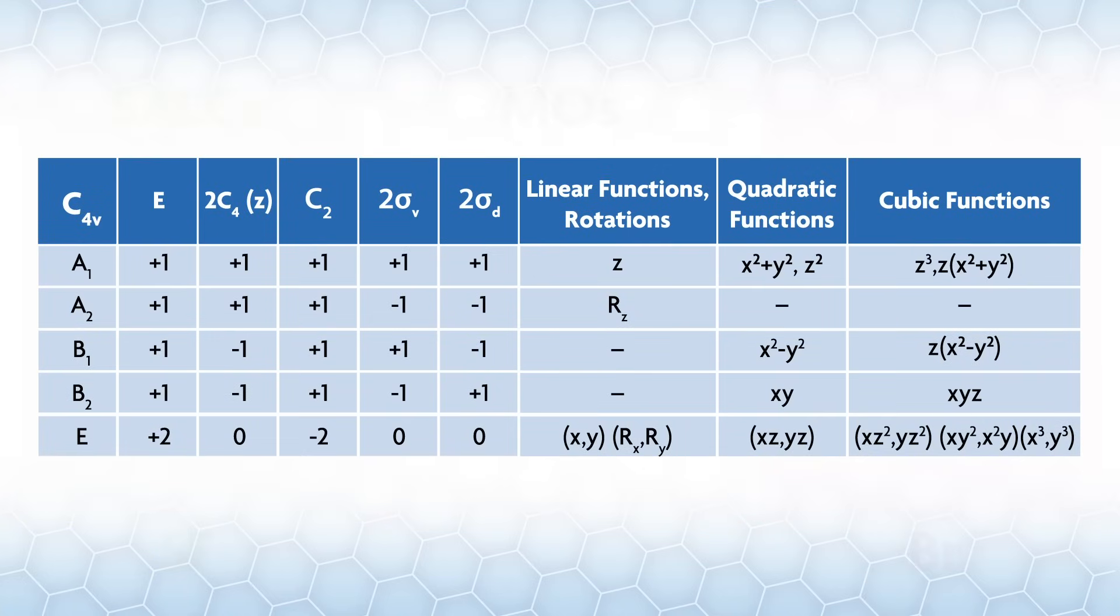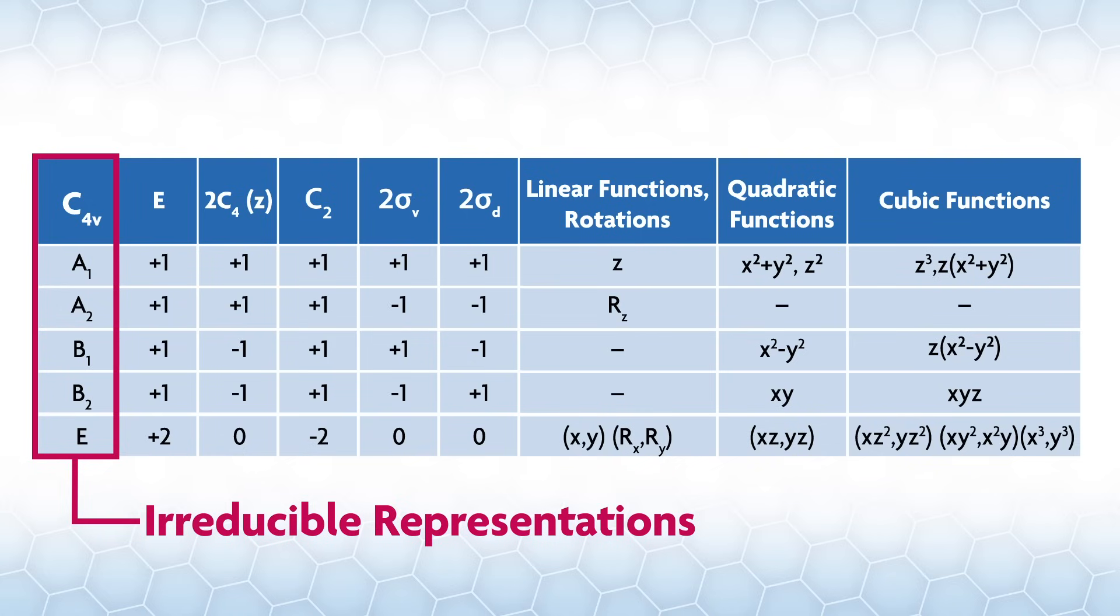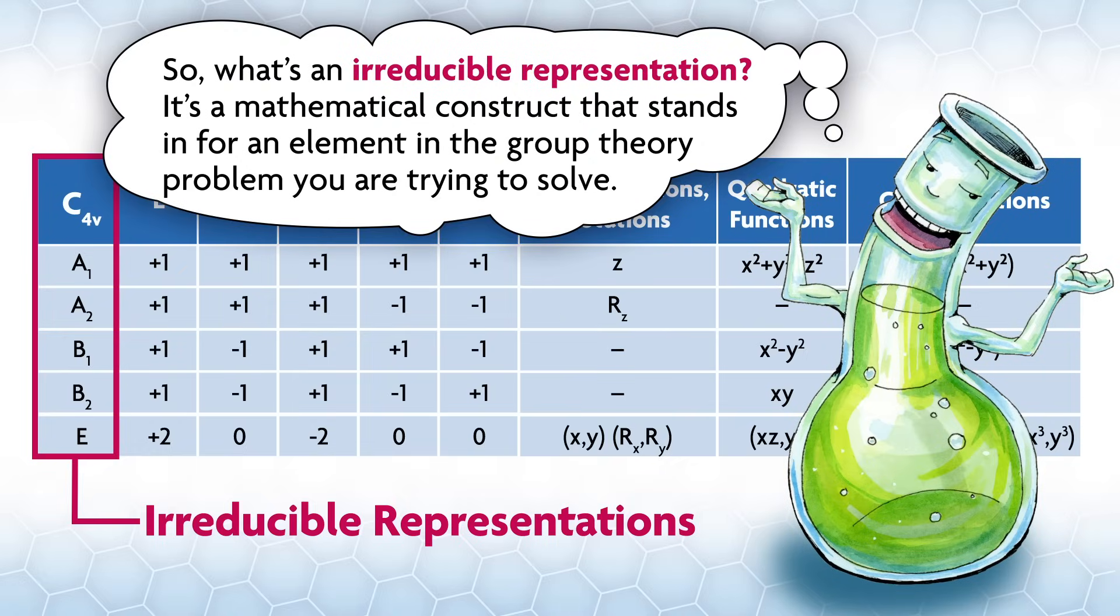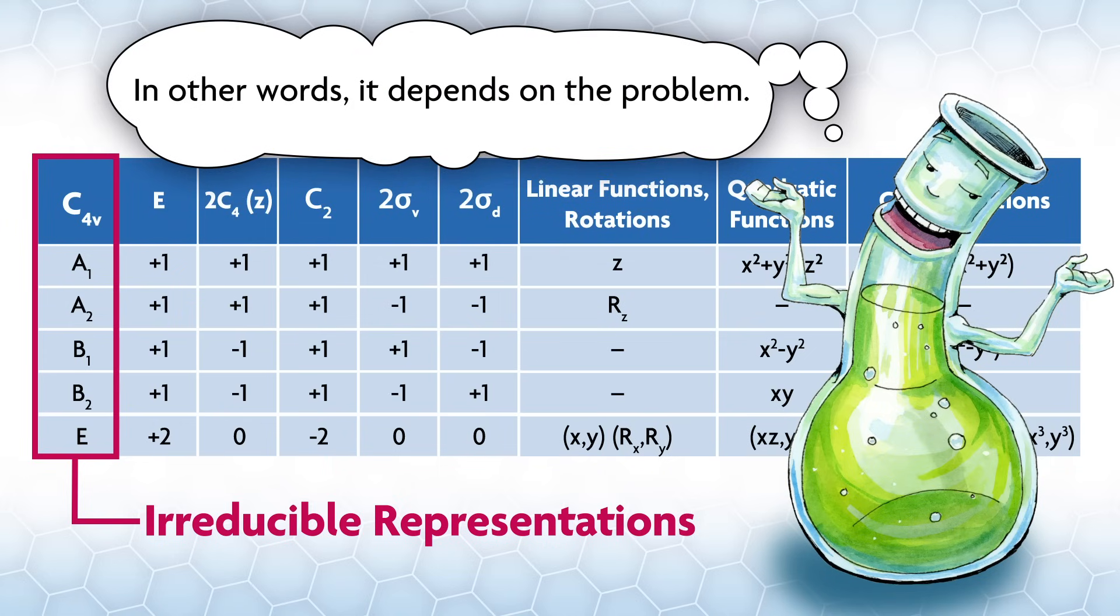Here is the C4v character table. In the left column, the symbols like A1, E, and B2 are the Mulliken symbols for the irreducible representations. So what's an irreducible representation? It's a mathematical construct that stands in for an element in the group theory problem you're trying to solve. In other words, it depends on the problem.